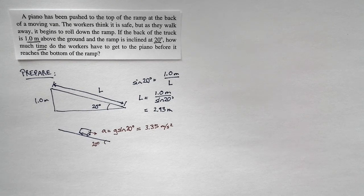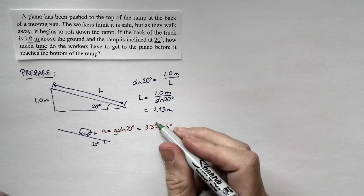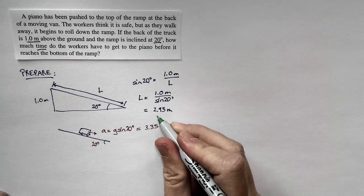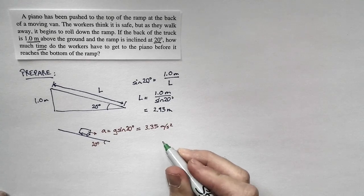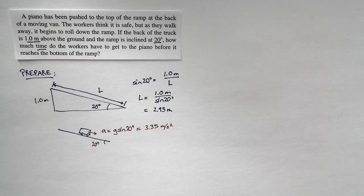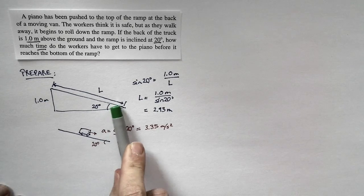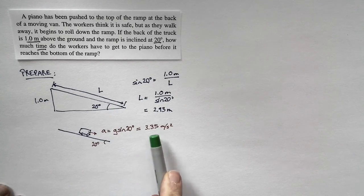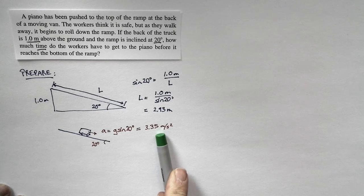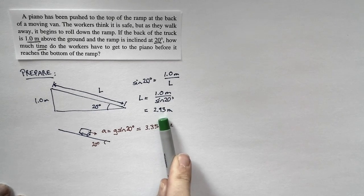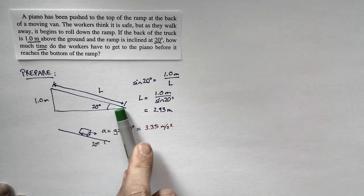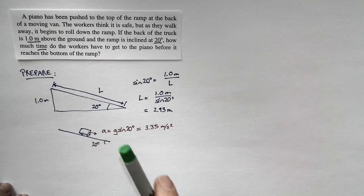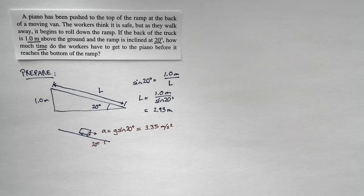Now let's do some initial assessment. The object has to slide 2.93 meters and the acceleration is 3.35 meters per second squared. I don't expect it to take very long to get from top to bottom. This is about one-third of the acceleration of gravity, and the distance is about 10 feet. So I'm expecting the piano to get there very quickly — I think by the time they notice it, it's going to be too late.